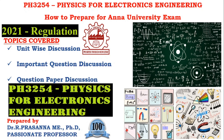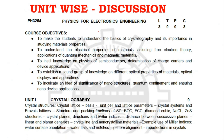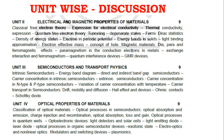We will start with unit-wise discussion. In Unit 1, Crystallography, the first important topic is crystal structure and packing factor — this is definitely a question. SC, BCC, FCC, and diamond cubic structures are confirmed questions. Miller indices with complete explanation is also a confirmed question. Another important question in Unit 1 is imperfection in crystals.